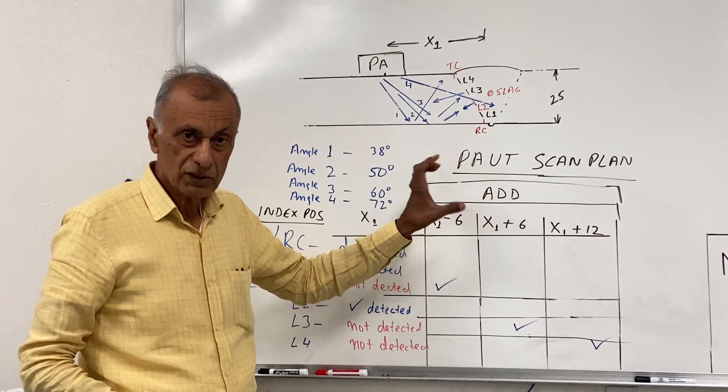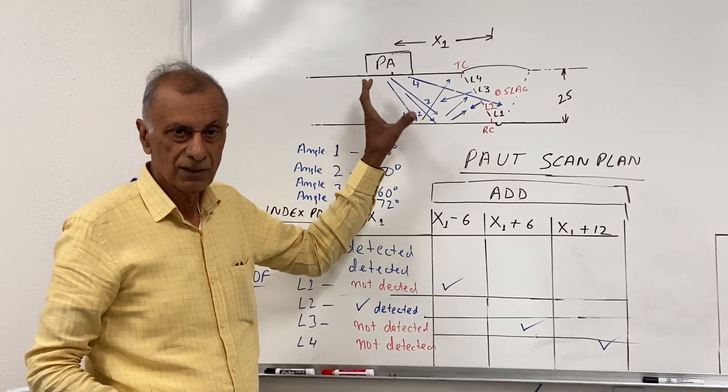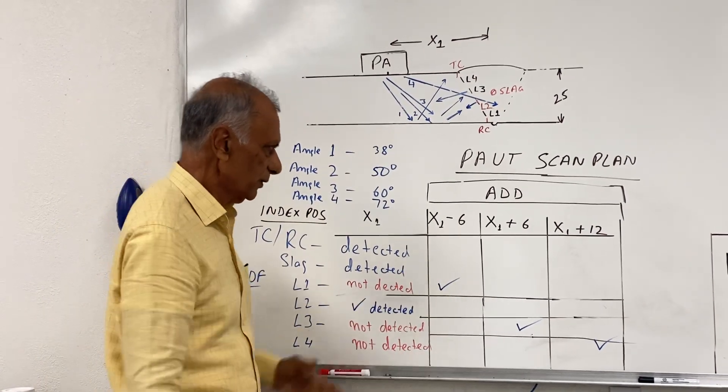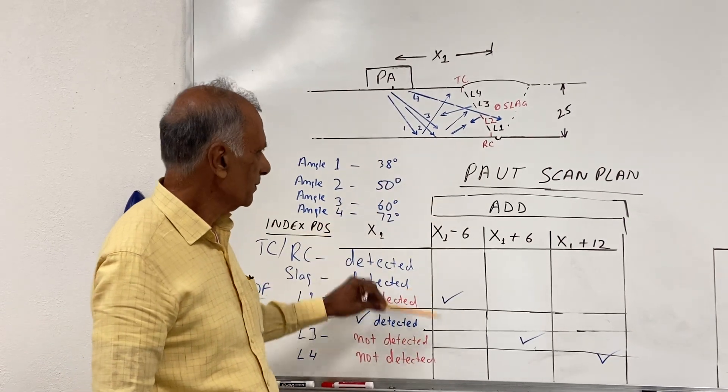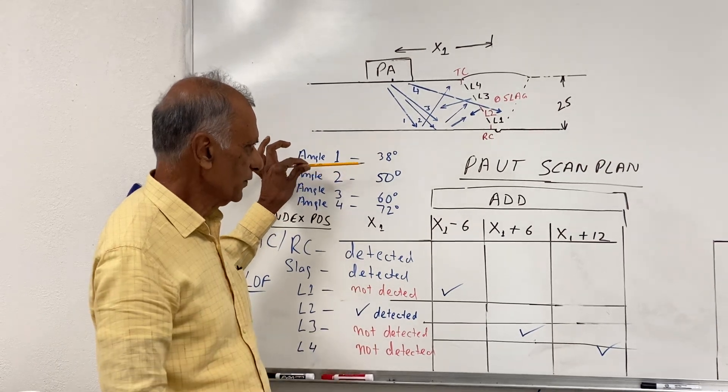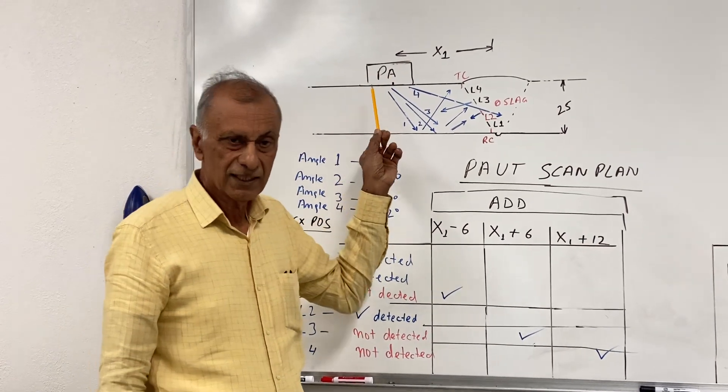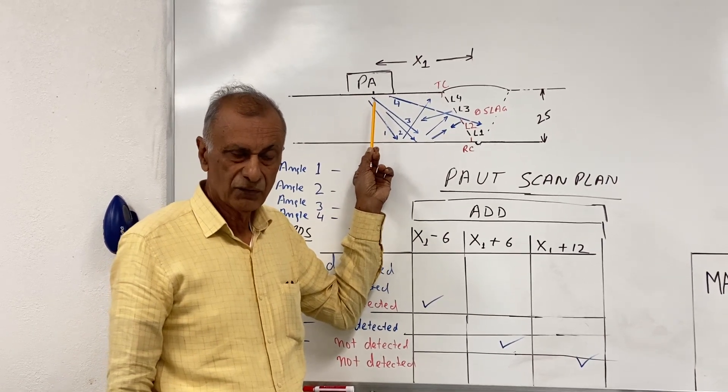Now if you are looking for smaller lack of fusion flaws, then you have to reduce this pitch, which is the 6mm, you may have to reduce it to 4. So that, you have to decide on your own. But basically, in this lecture, what I wanted to emphasize is that a single index position is not the right way to do the phased array.